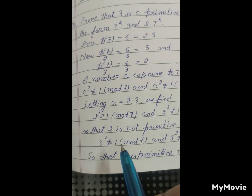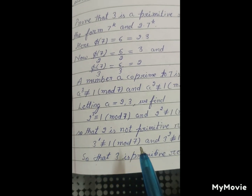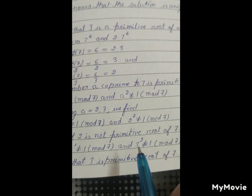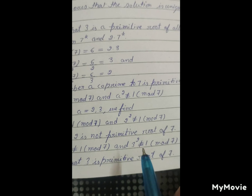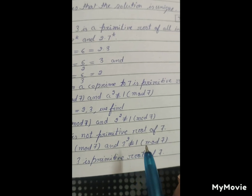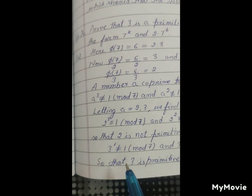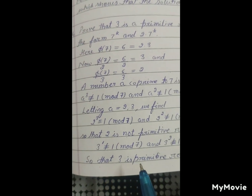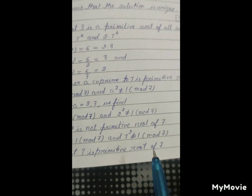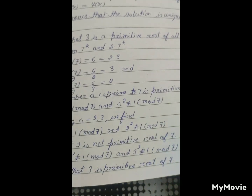3¹ is not congruent to 1 modulo 7, and 3² is not congruent to 1 modulo 7, so 3 is a primitive root of 7.